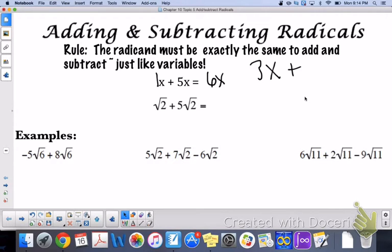But if you have like three x plus four y, you can't combine those. That doesn't give you seven of anything. You have three x's and four y's and you can't combine them.